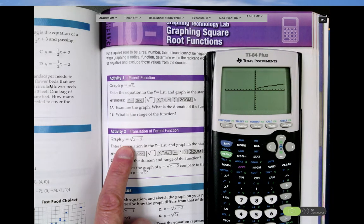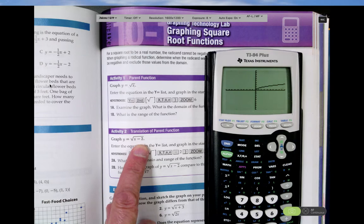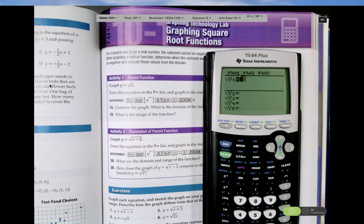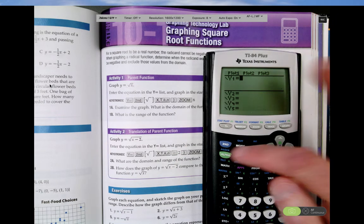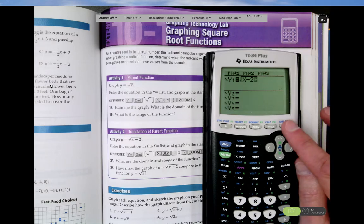The next one is graphing the square root of x minus 2. So the radicand is x minus 2. So let's go ahead and do that. I press y equals. And then I'm just going to clear. Then second function, square root, x minus 2. And let's go ahead and graph it.